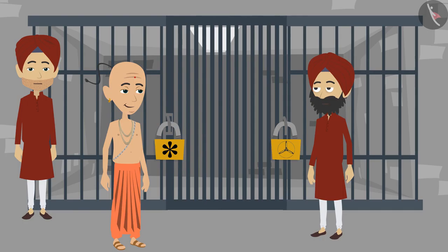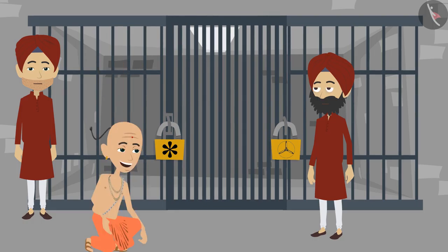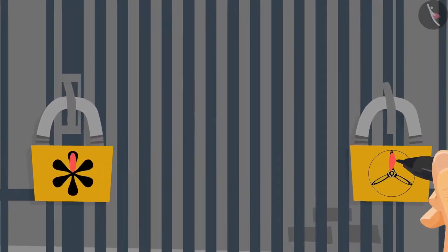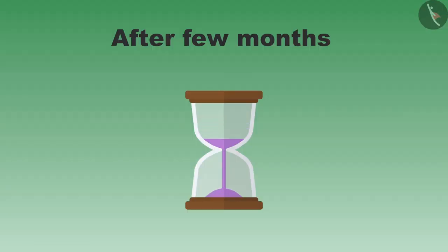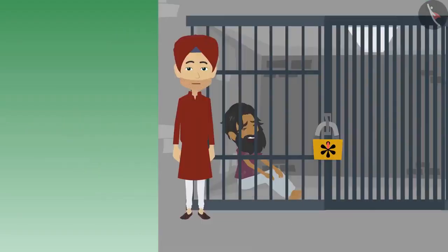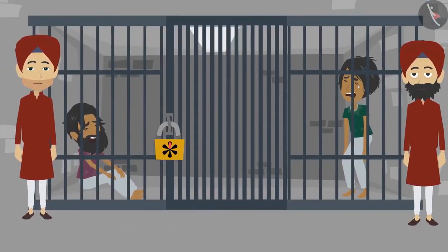Tenali Rama smiled and he said something to the jailer. Then he made some markings on the locks and returned to the king. Many months passed by, but there was no report of any escape since then.